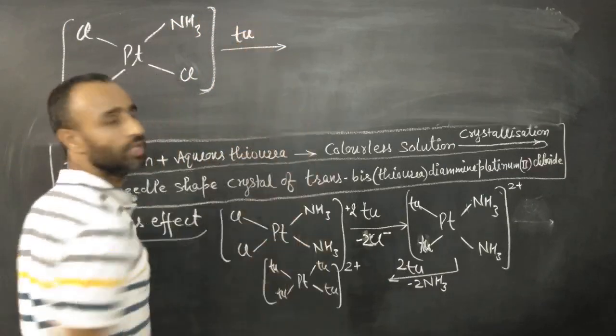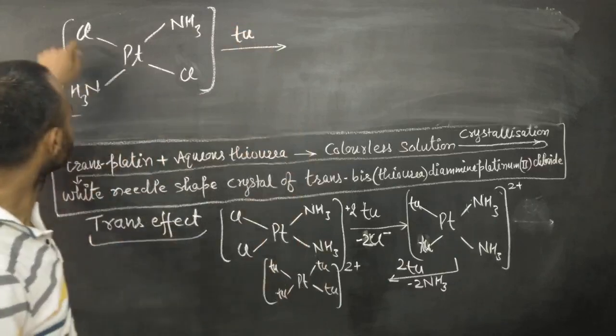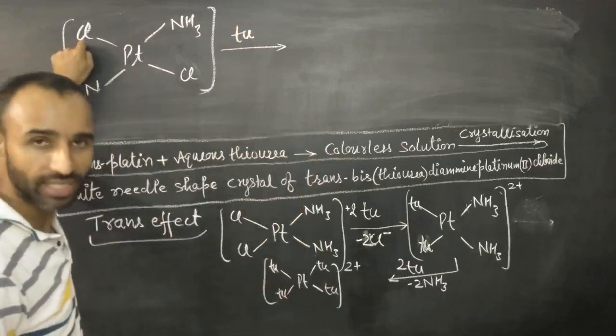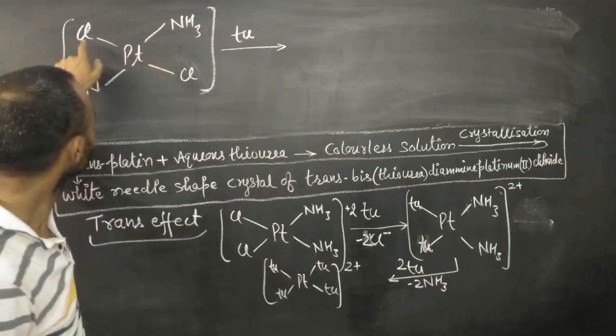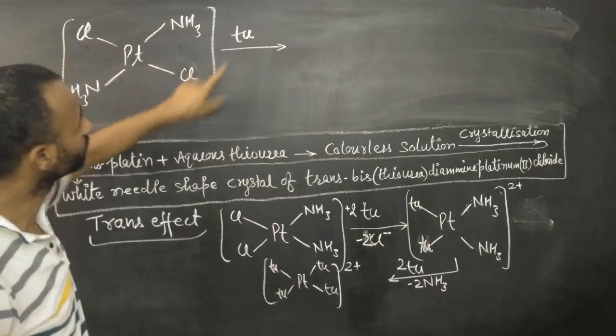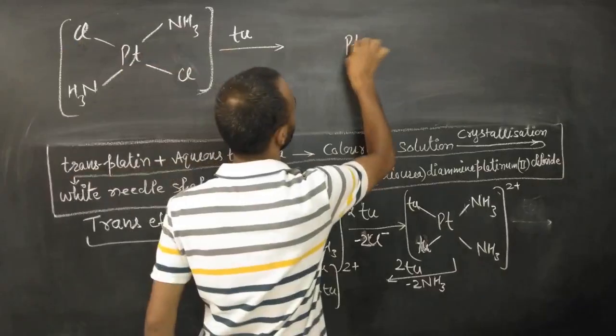First, you know, thiourea is added. And you know, Cl and ammonia - Cl has greater trans effect than ammonia. So there is one Cl corresponding to the other, so one Cl is removed by thiourea.